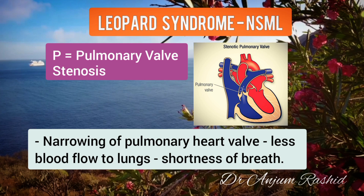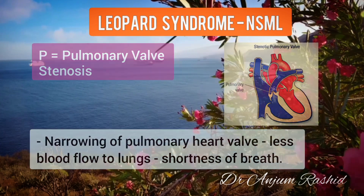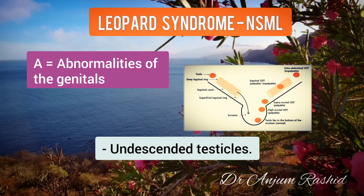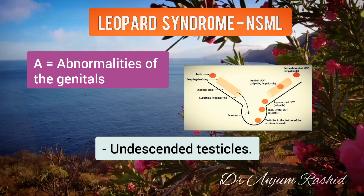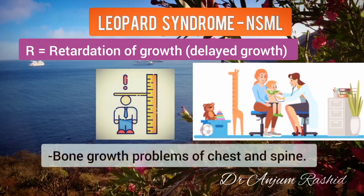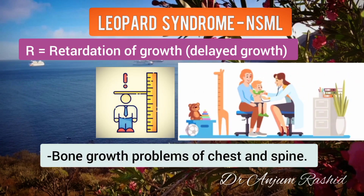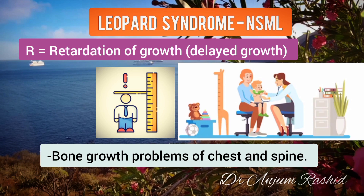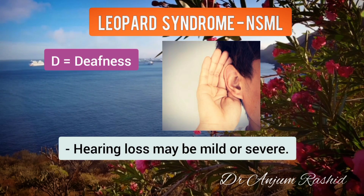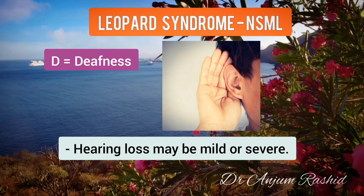Pulmonary valve stenosis results in less blood flow to the lungs and causes shortness of breath. A stands for Abnormalities of the genitals, such as undescended testicles. R stands for Retardation of growth, or delayed growth, which includes bone growth problems of the chest and the spine.